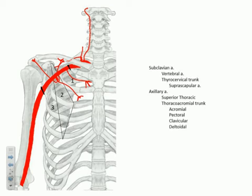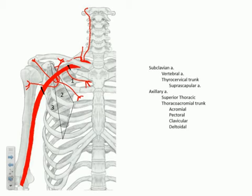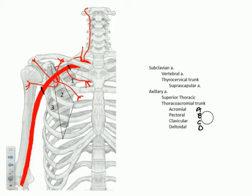The fourth branch of the thoracoacromial trunk is the deltoidal, which travels laterally to supply the deltoid muscle and other structures in this region. A helpful mnemonic for remembering these four branches is the 'broken alphabet': normally you have A, B, C, D — but here, the B is slightly broken, leaving P. So we have A-P-C-D: acromial, pectoral, clavicular, and deltoidal.